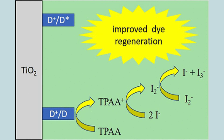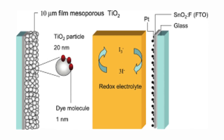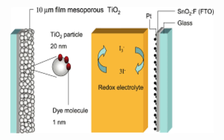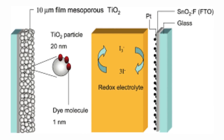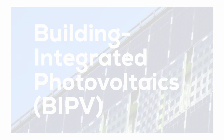The electrolyte contains an iodide/triiodide redox couple. At the counter-electrode (cathode), the triiodide ions are reduced by the electrons that have completed the external circuit, converting them back to iodide ions. This regenerates the electrolyte and closes the circuit, making the device a regenerative system.